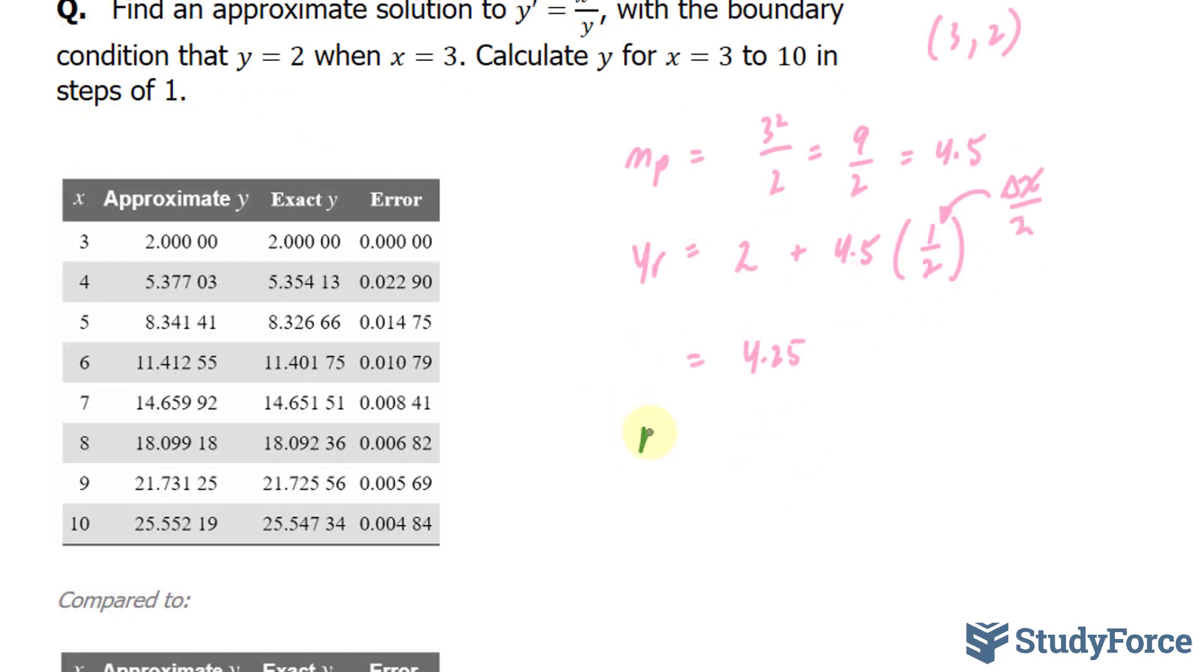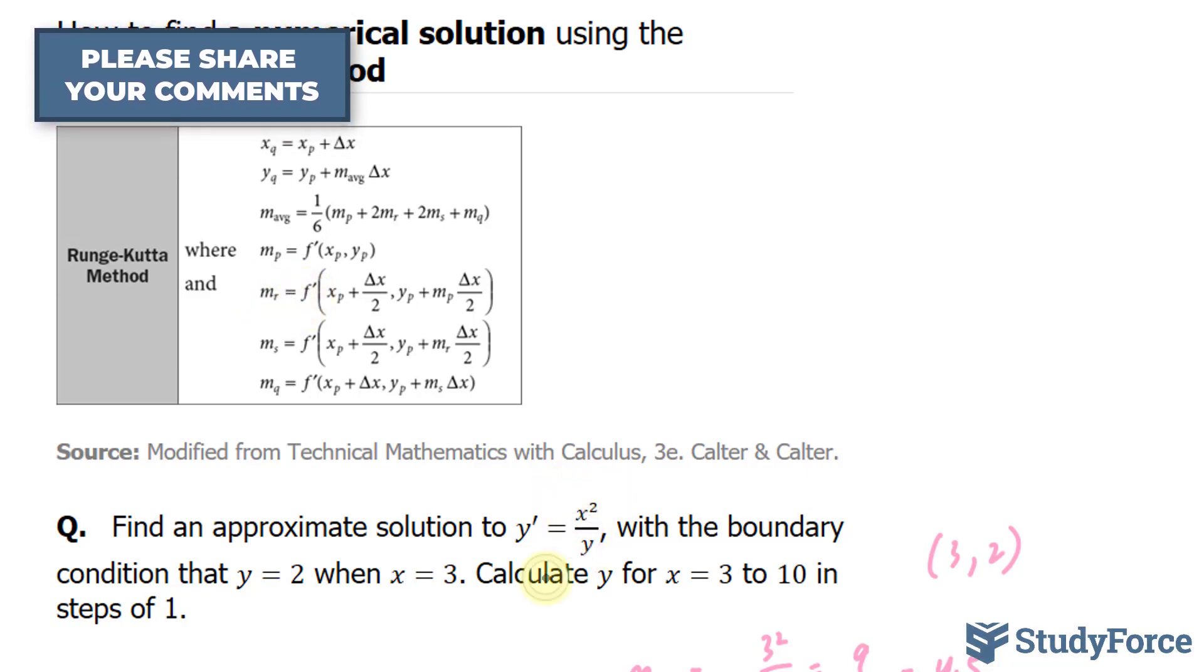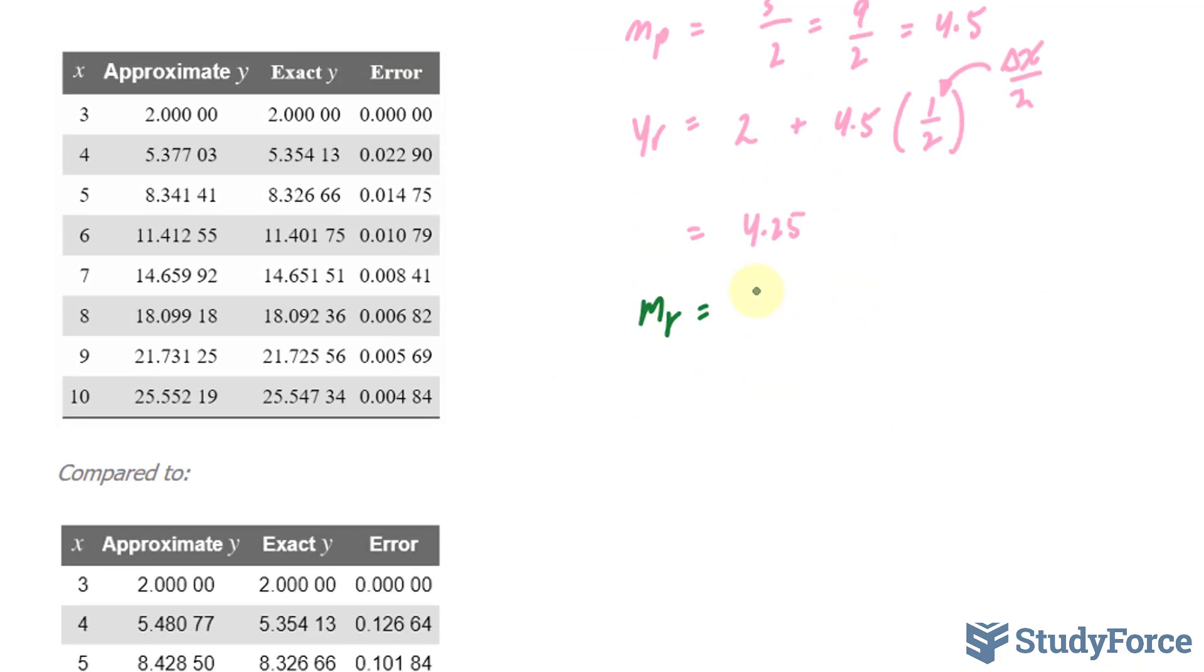Once you've found y_r, you need to find m_r. To find this, we use the formula where m_r equals the derivative evaluated at x equal to our previous x value. Our previous x value was 3, plus Δx/2. Δx was 1, divided by 2 is half, so 3 + 0.5 equals 3.5. The y-coordinate will be our previous y, which was 2, plus the slope that we found previously, 4.5, times 0.5. If we plug this into our calculator, we get 4.25. So I'm going to evaluate it at (3.5, 4.25). Our formula was x²/y = 3.5²/4.25. If we put this in our calculator, we should end up with approximately 2.882. I just found m_r.